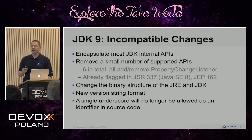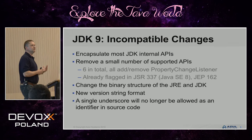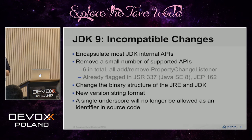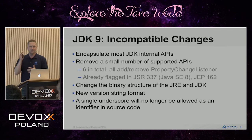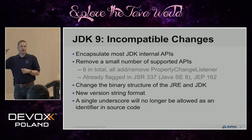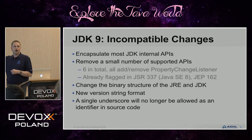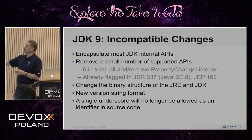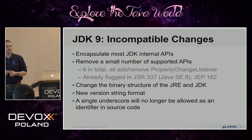JDK 9 is introducing some incompatible changes that you need to be aware of when migrating from JDK 8. First is encapsulating the internal JDK APIs — the ones not intended for public use. A small number — six to be precise — of supported APIs highlighted in Java SE 8 are going to be removed. These are the first APIs that will actually be removed from Java in JDK 9. They are all around property change listeners, so you may or may not have used them.